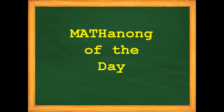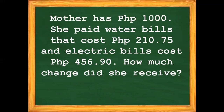For our Matanong of the day: Mother has 1,000 pesos. She paid water bills that cost 210 pesos and 75 centavos, and electric bills that cost 456 pesos and 90 centavos. How much change did she receive?